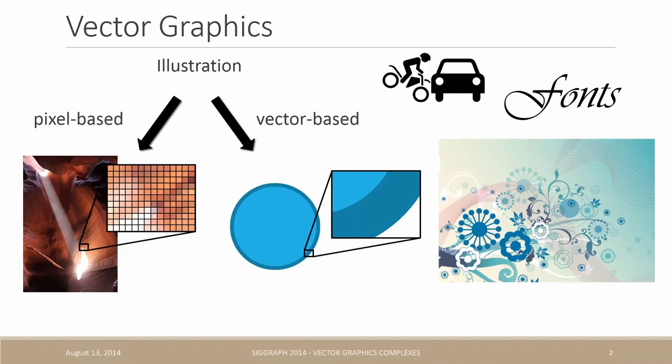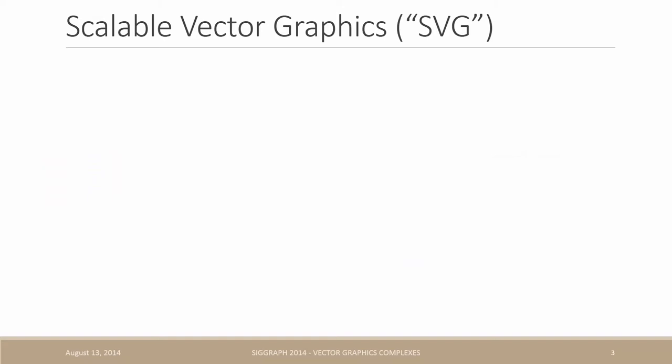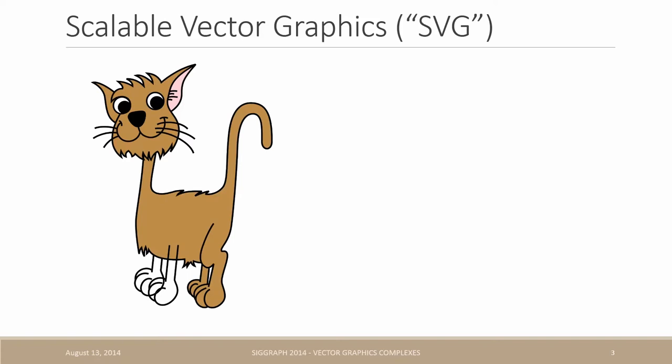But very surprisingly, most vector graphics systems today still use a traditional and very limited representation that we call SVG. It is made of open curves and closed curves that you can optionally fill with a color or not. By using a large number of such primitives, it is possible to create arbitrarily complex illustrations such as this lovely cat.